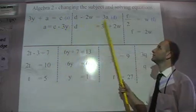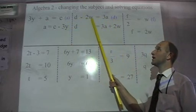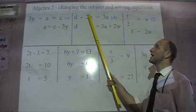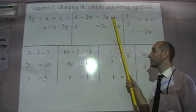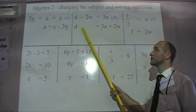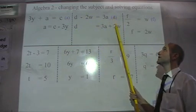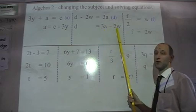This equation here, I want to make D the subject, so I need to get rid of minus 2W. If I add 2W to that side, and I add 2W to that side, minus 2W plus 2W cancels, which is exactly what I wanted. Add 2W to this side, and then I have 3A plus 2W on this side.